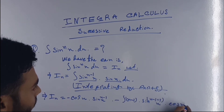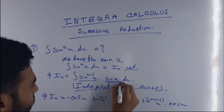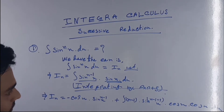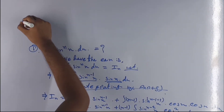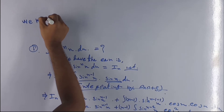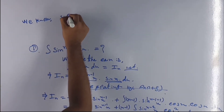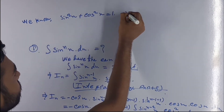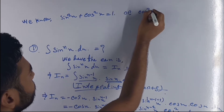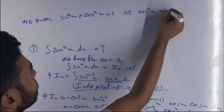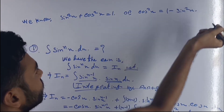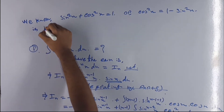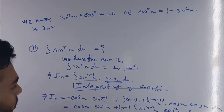The integration of sin(x) gives minus cos(x), so minus and minus becomes plus. We also write cos(x) times cos(x) as cos²(x). Now we use the trigonometric identity: sin²(x) + cos²(x) = 1, so cos²(x) = 1 − sin²(x). We substitute 1 − sin²(x) in place of cos²(x).